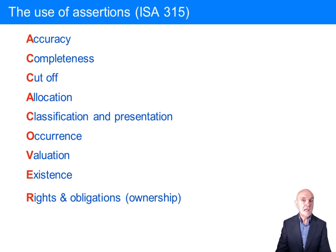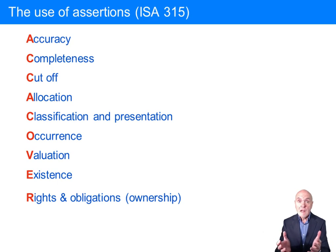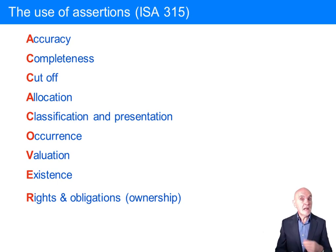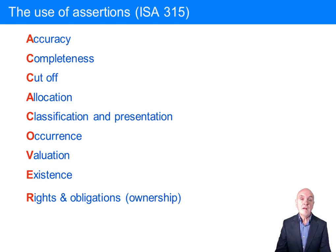Valuation is a very key assertion in inventory. Have we complied with the accounting standard which says that inventory should be valued at the lower of cost and net realizable value? We need evidence about its cost, evidence about the net realizable value, and evidence that the client has gone for the lower of the two for every piece of inventory.